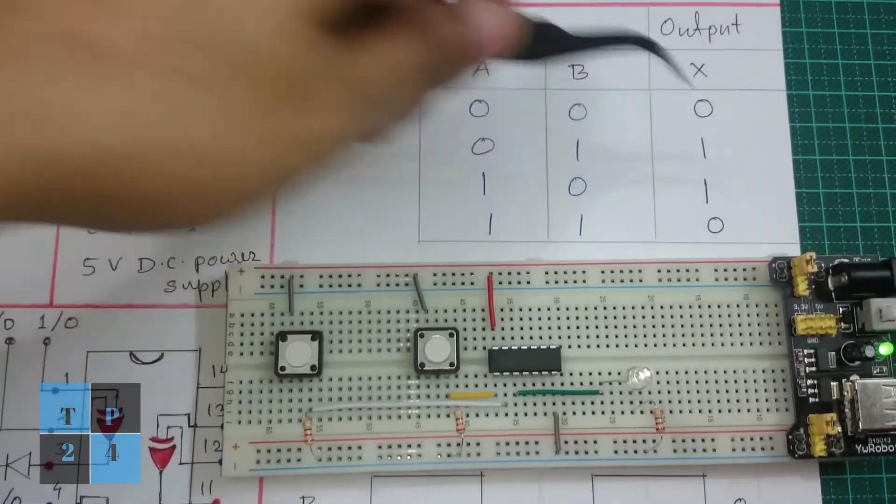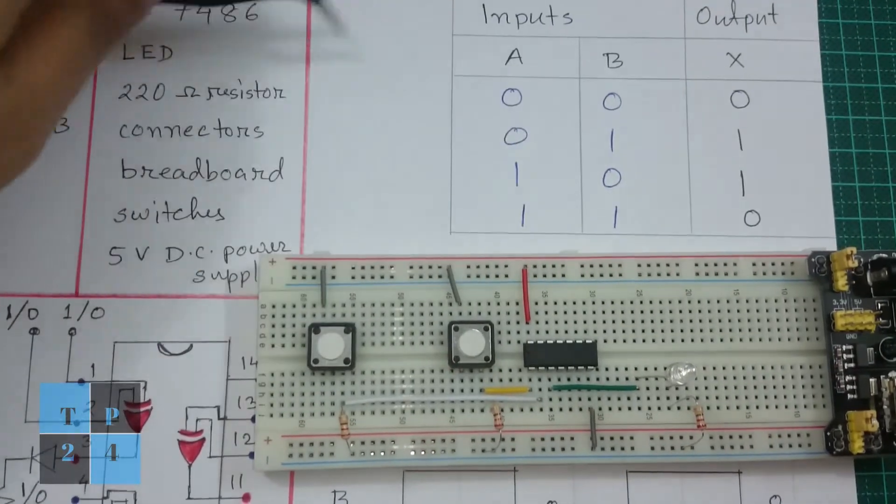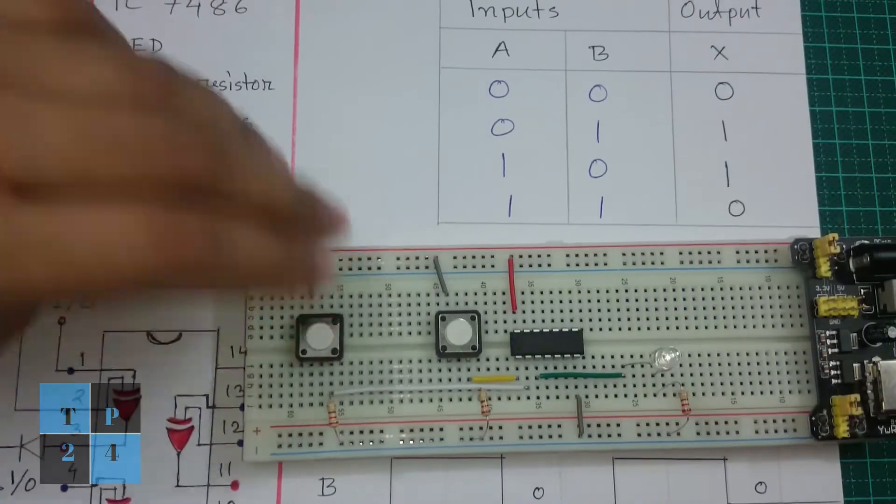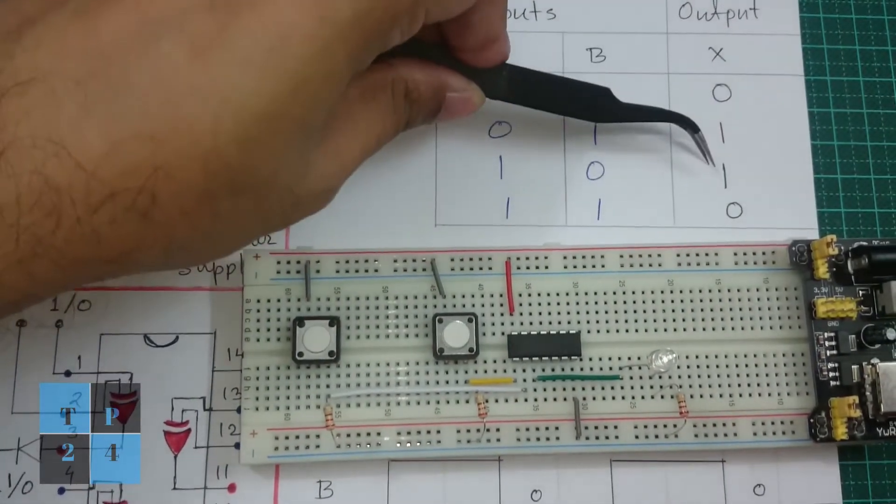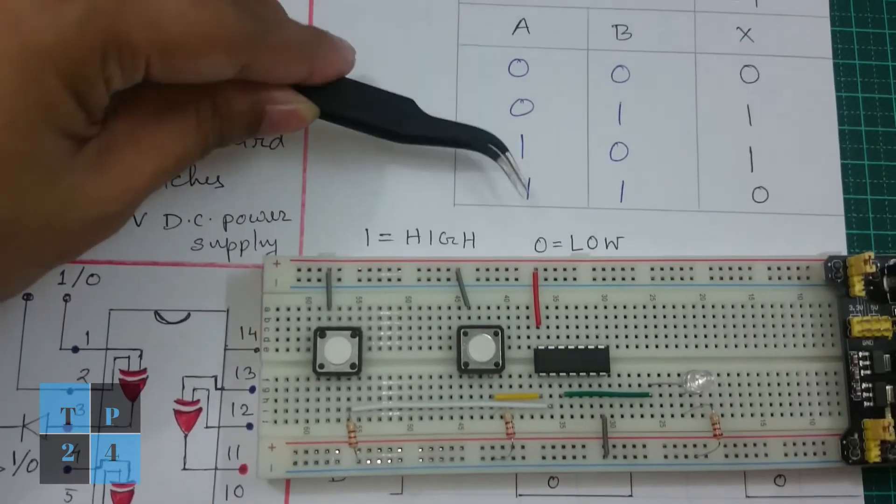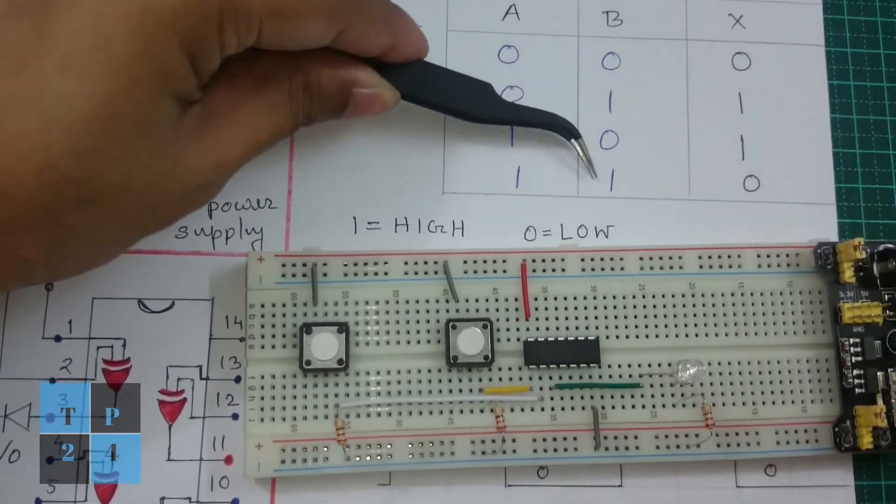If A is 1 and B is 0 that means in this condition LED is on which proves again the output is 1.